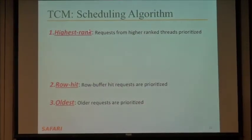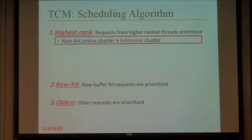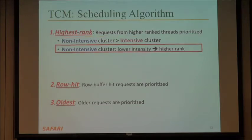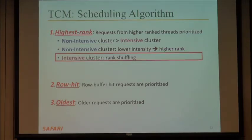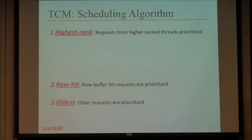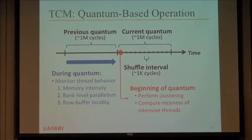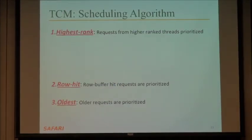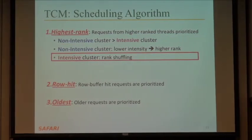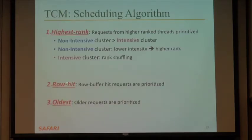The final scheduling algorithm: requests from higher-ranked threads are prioritized. Non-intensive cluster is ranked higher than intensive cluster. Within the non-intensive cluster, lower memory-intensity threads are ranked higher. Within the intensive cluster, ranks are periodically shuffled at fine grain, with the shuffling order predetermined at the beginning of the quantum — so there's no overhead at very fine grain. Row-hit requests are prioritized over others, and older requests are prioritized over others to break ties.